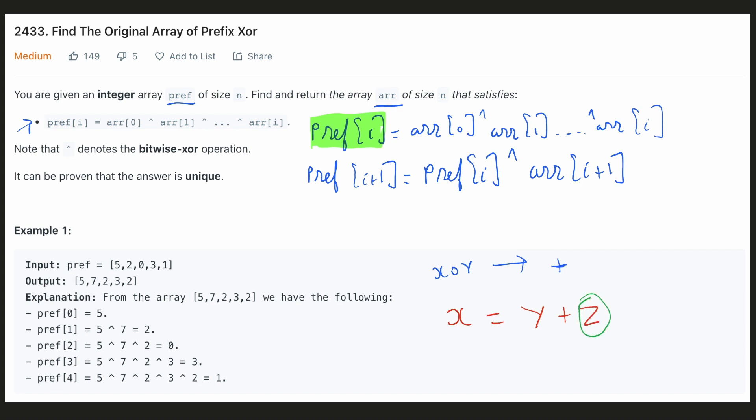Let's suppose we have to find out z. This equation could be rearranged as z is equal to x minus y, similarly because subtraction is the reverse operation of addition. Similarly we have to use the reverse operation of xor operator. The reverse operation of the xor operator is the xor operator itself.